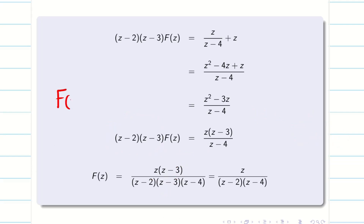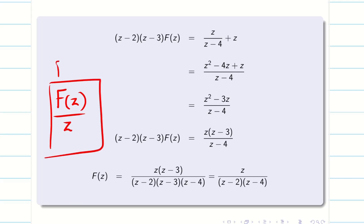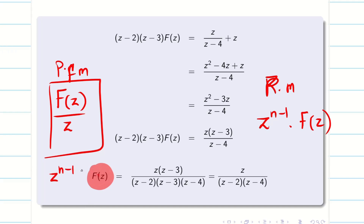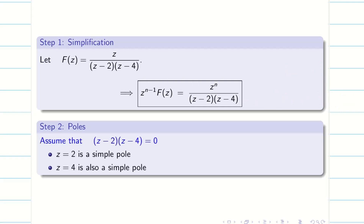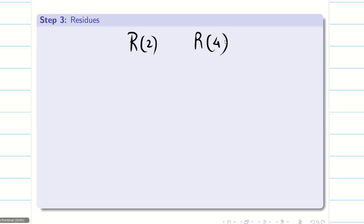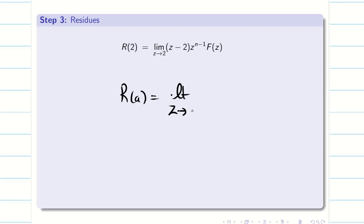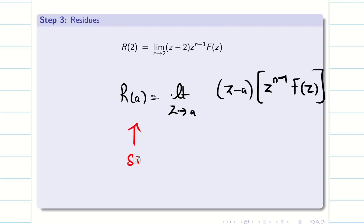In partial fraction, do you remember students, the approach is simply F(z) divided by Z, and then we can do the partial fraction method. In the residue method, we have to work with Z power n minus 1 into capital F(z). For this final F(z), we have to multiply Z power n minus 1 on both sides. Then we can get the required form which can be used for finding residues. Now, making the denominator zero — (Z minus 2)(Z minus 4) equal to zero — we have two roots, Z = 2 and Z = 4, and the power here is 1. Therefore, Z = 2 is a simple pole as well as Z = 4 is also a simple pole. The first two steps are over.